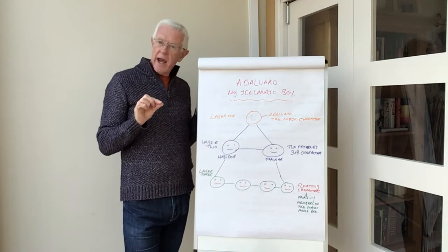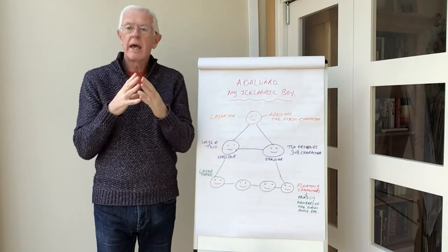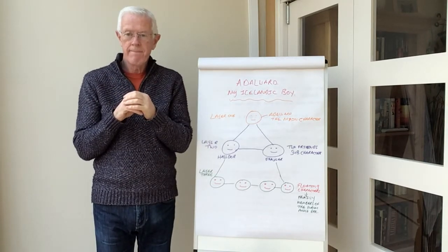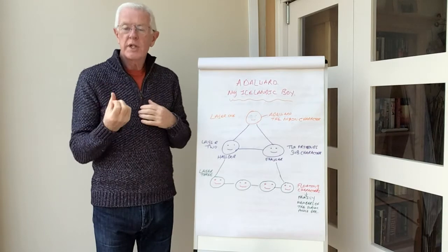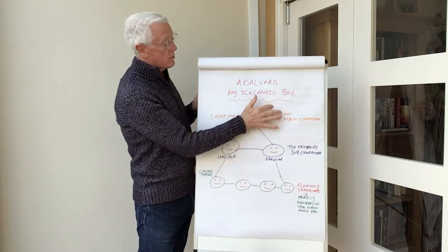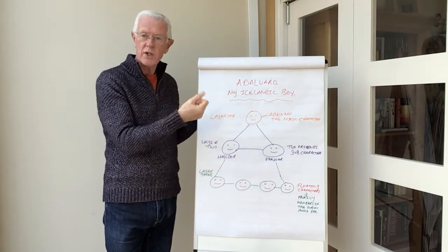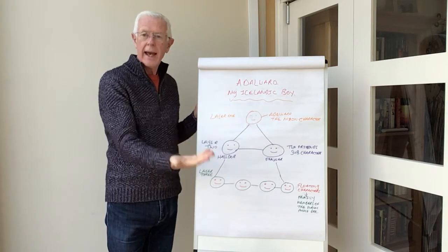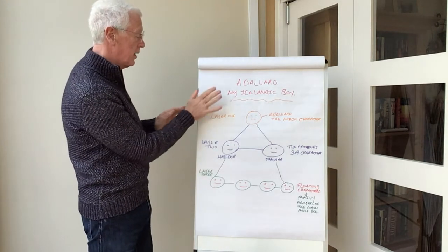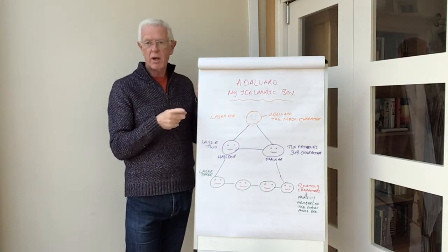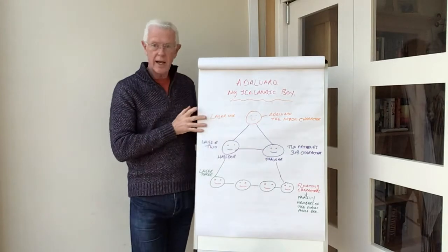Like last week when I did the main character and told you all about Alderwood, the main character of my Icelandic story, here I'm doing exactly the same thing — putting the characters of my next story to you so you can see how I'm using the main character, where the sub-characters fit, and where the floating characters are going to fit into the story I'm writing. Here we have layer one of the triangle of characters — that is Alderwood. He's the main character, he's in layer one, and he's the only one in that layer.